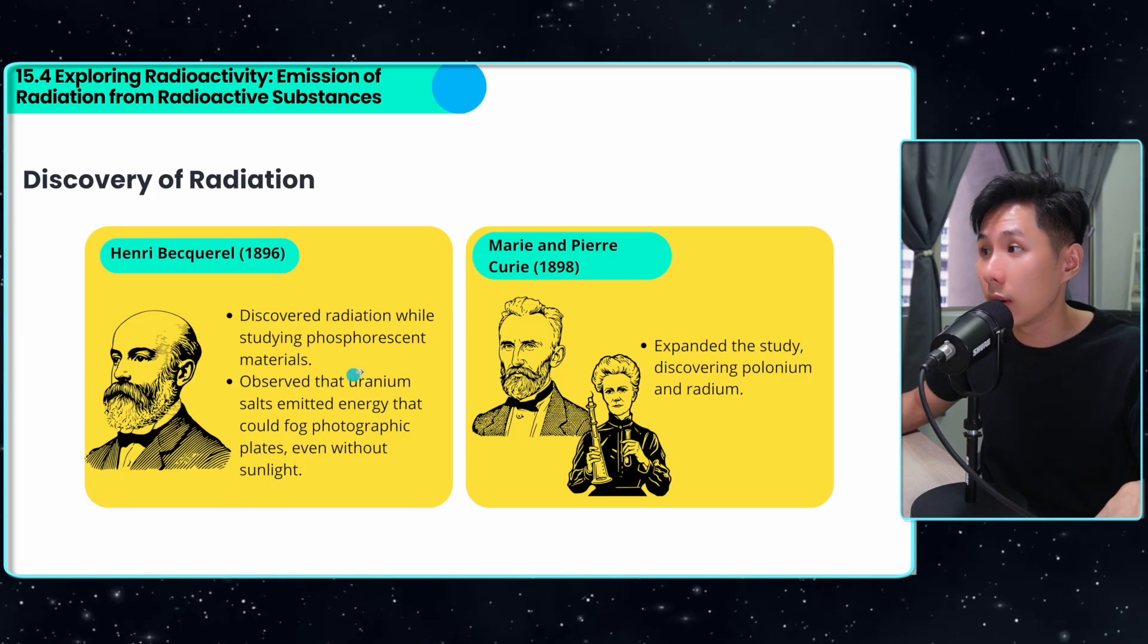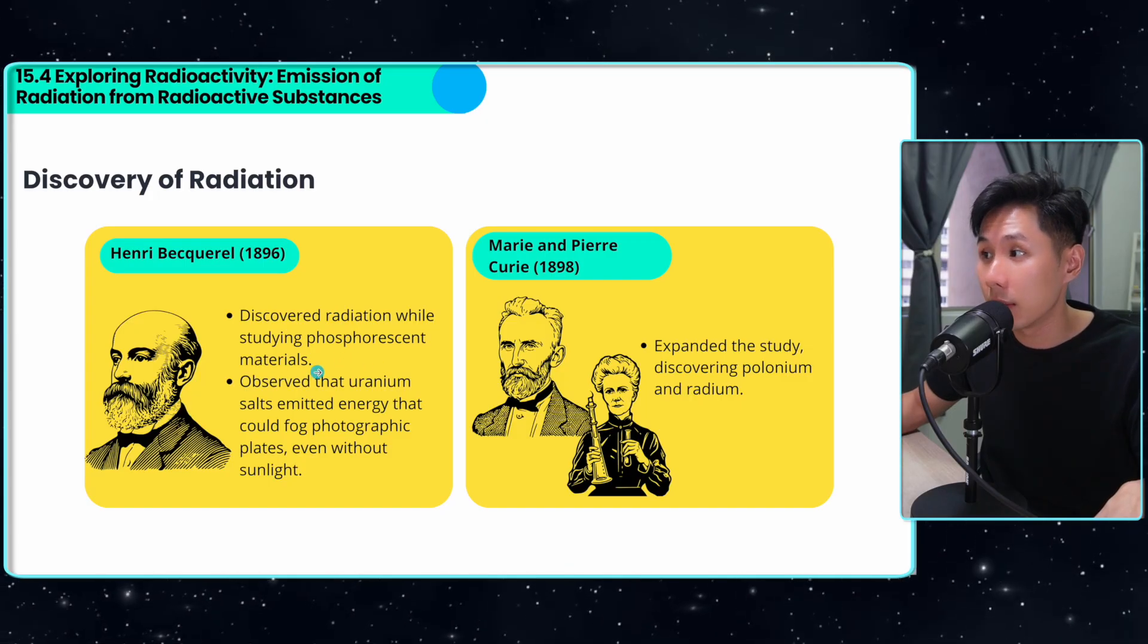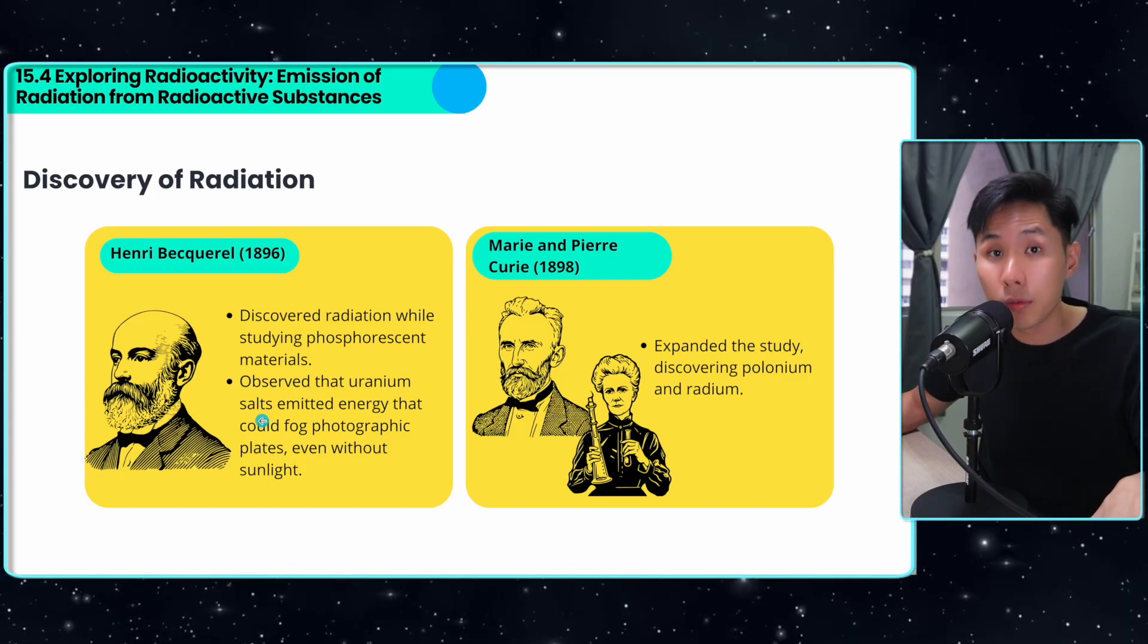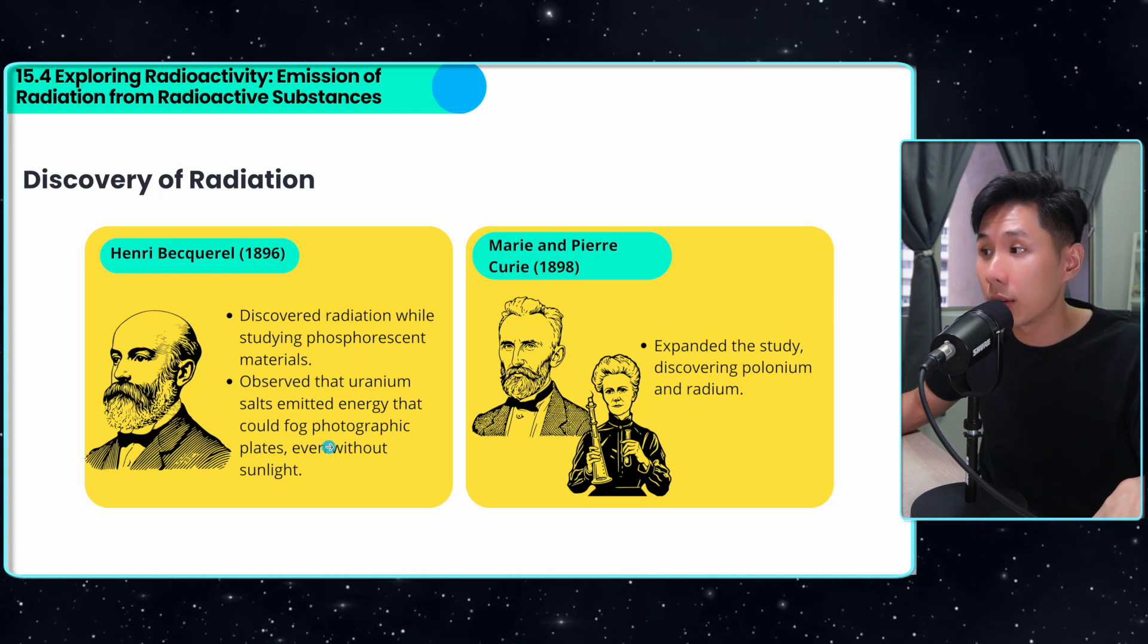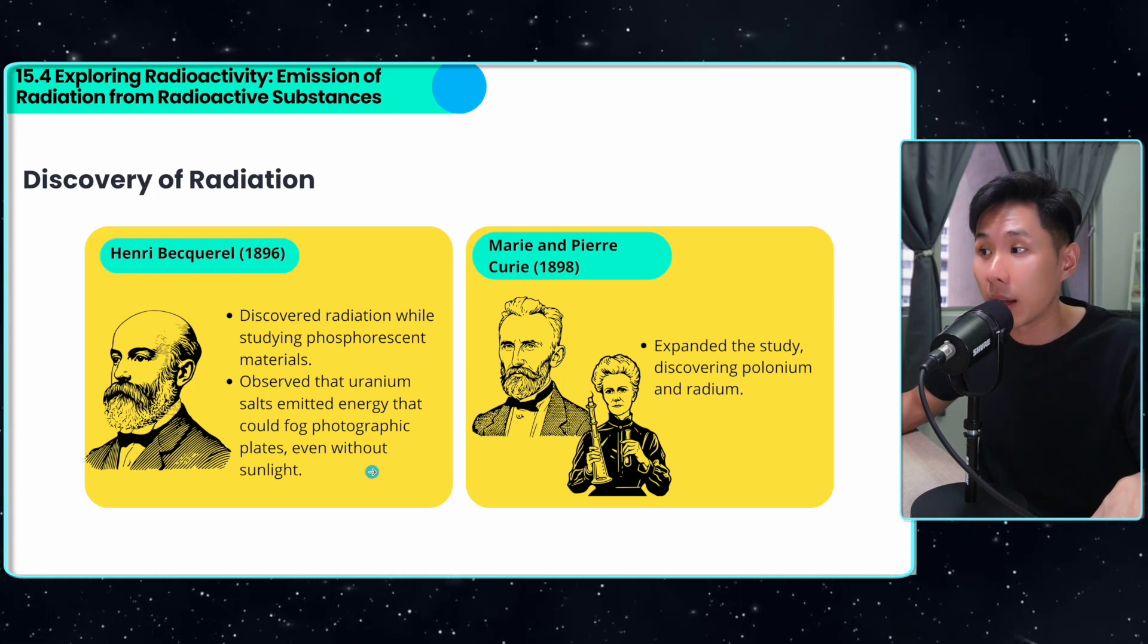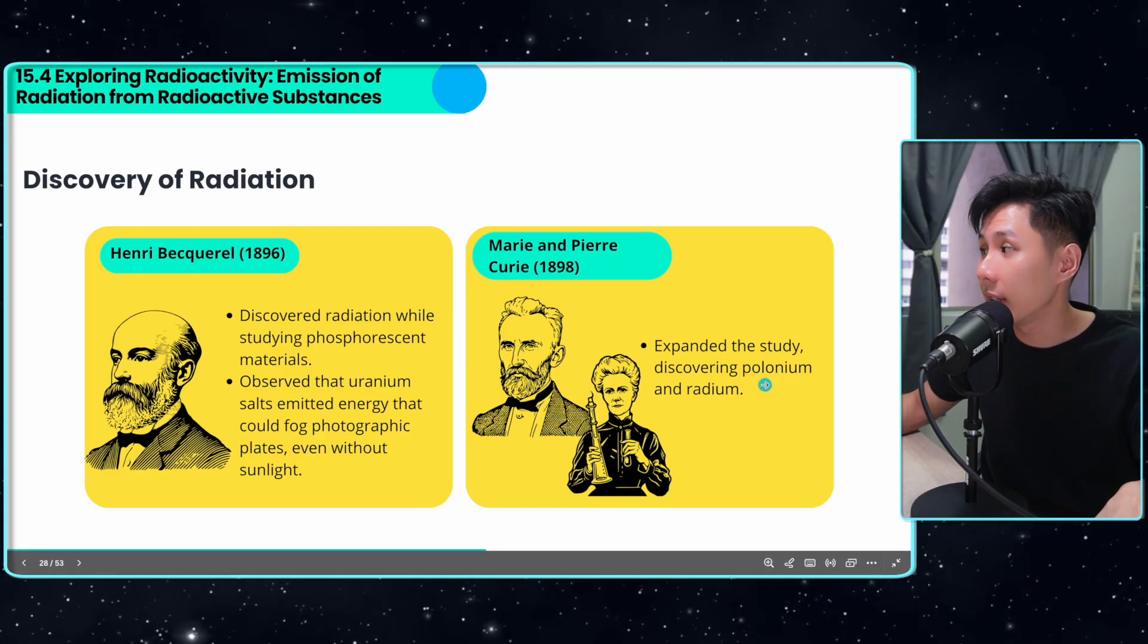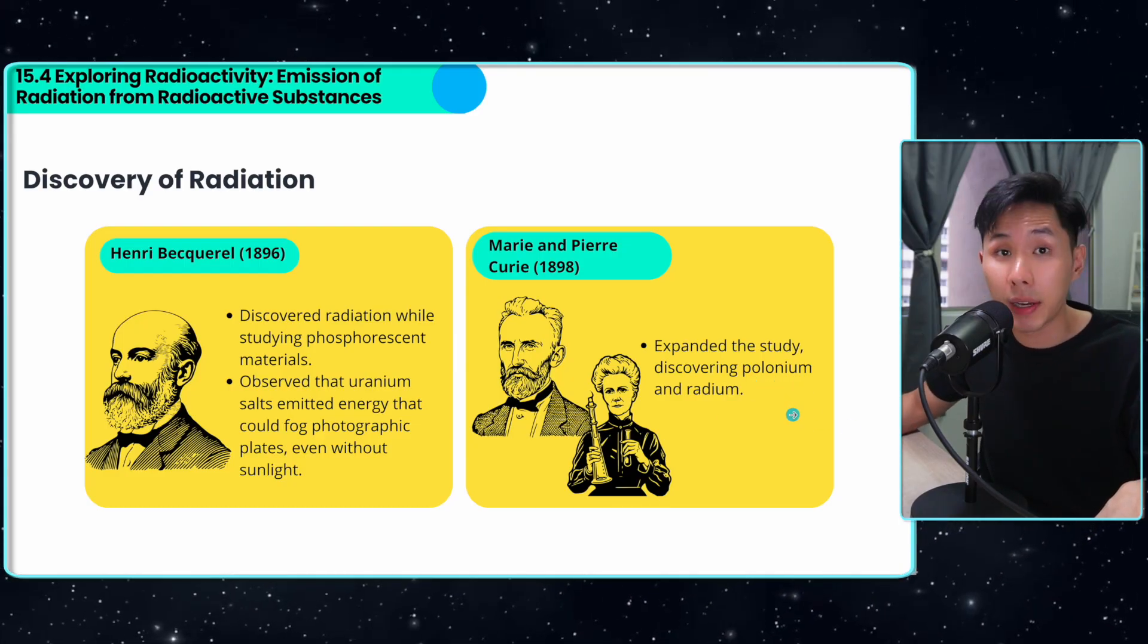Henry Becquerel discovered radiation while studying phosphorescent material. He observed that uranium salts emitted energy that could fog photographic plates, even without sunlight. Other scientists expanded the study, discovering polonium and radium.